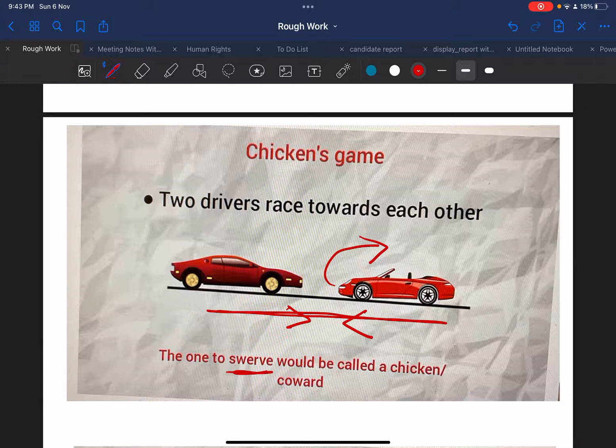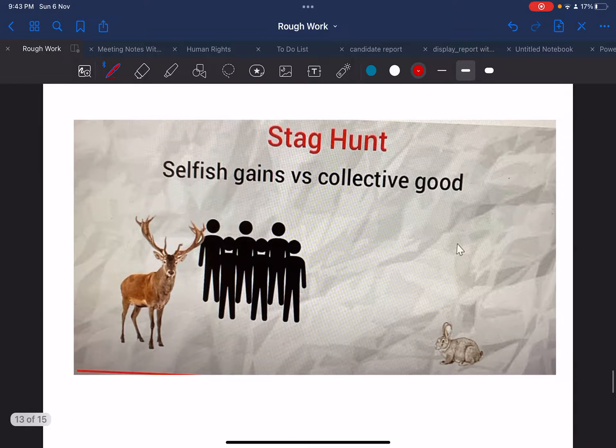They reach to a certain point where they feel that in case if one will swerve, that means if one will take a U-turn, then that person would be called a chicken or coward. So no one wants to take this, both just keep going on. You have the current situation of Russia and Ukraine - the war has been going on for the past seven months because they don't want to be called chicken or coward. You have many more situations - North Korea which has been increasing its nuclear weapons. This is the situation of security dilemma as well as Chicken's Game.